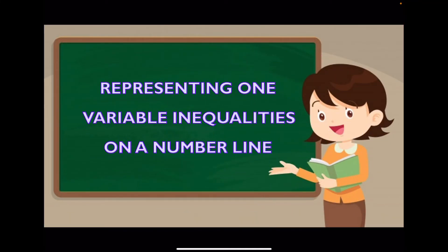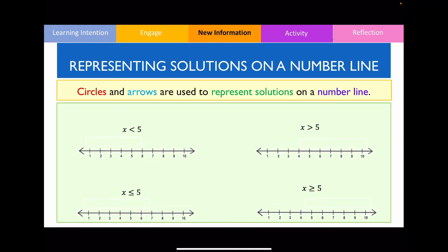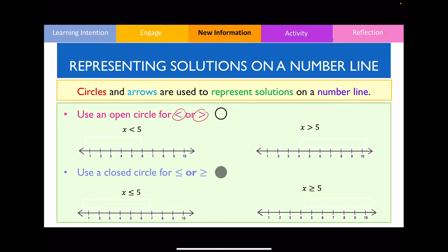The next thing I want to go through is how to properly represent solutions of a one variable inequality on a number line. We're going to use circles and arrows, and there are two important things to understand. First, we use an open circle — a circle that is not shaded — when you encounter the less than or greater than symbols. However, we use a closed or shaded circle when you encounter the less than or equal to and greater than or equal to symbols.